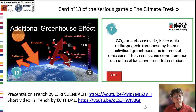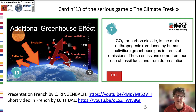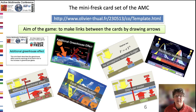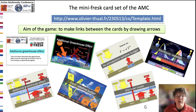On the back of this card, we read that carbon dioxide is the main anthropogenic greenhouse gas in terms of emissions, coming from our use of fossil fuels and from deforestation. This Climate Fresque card is enriched by the mini fresque of this AMC with five new cards that describe the greenhouse effect with more details.